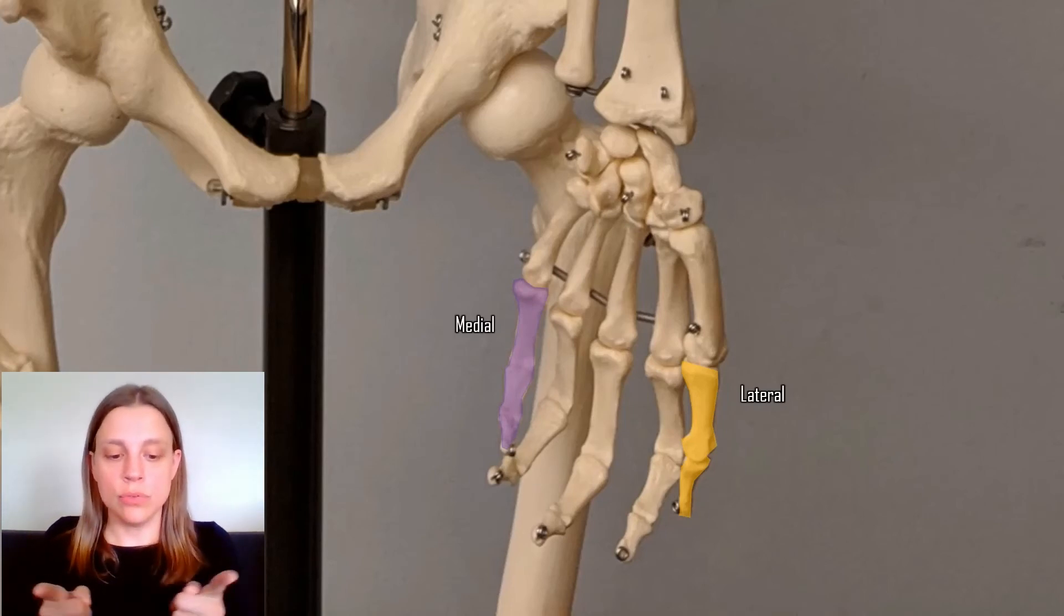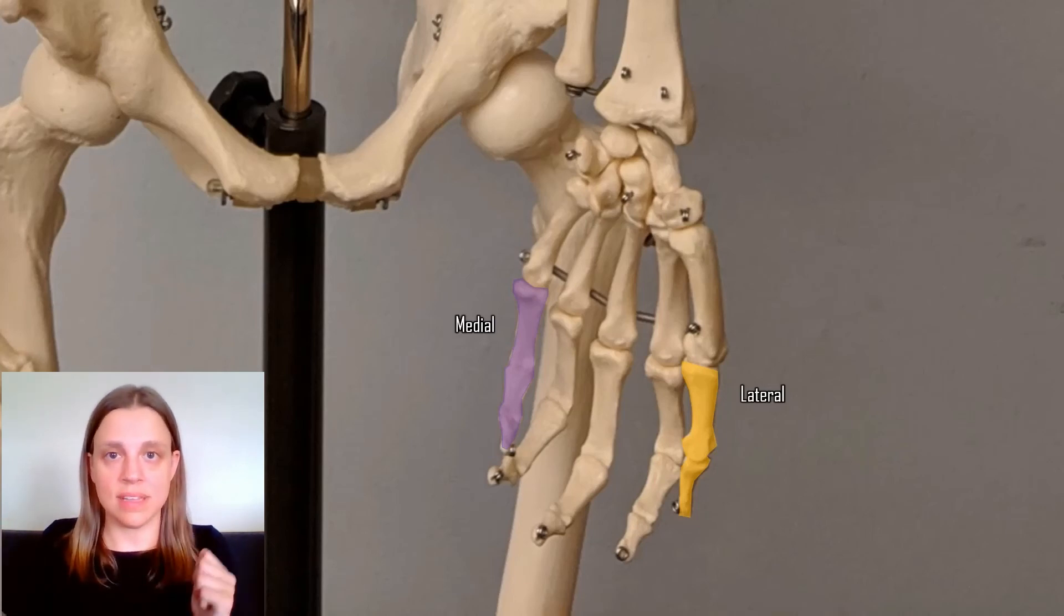And then we use the term intermediate to describe something that's in between a medial point and a lateral point. So in this example, the middle finger would be intermediate to the thumb and pinky.